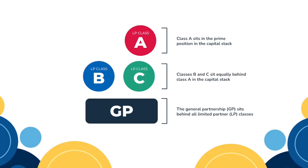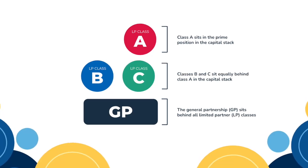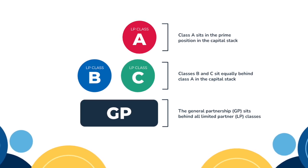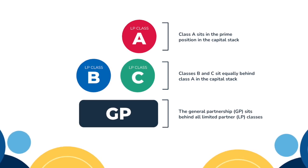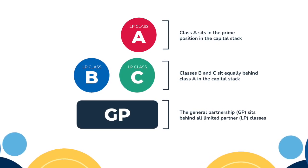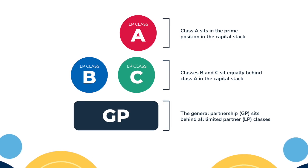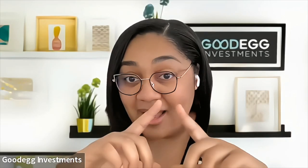The three classes we have available are Class A, Class B, and Class C. Class A is our preferred class and sits at the top of the capital stack. Classes B and C are our profit-sharing classes and sit behind Class A. You can think of it kind of like a pyramid — Class A is at the top, and Classes B and C, equally as important, come behind Class A.